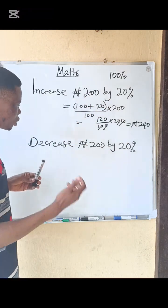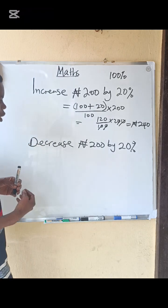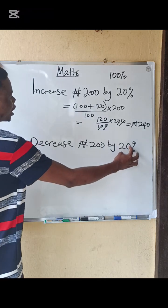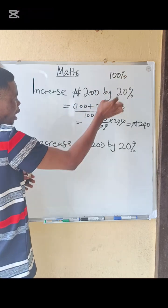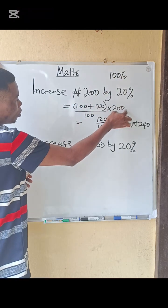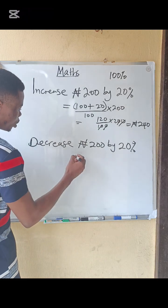Decrease means a reduction. So that means I'm going to subtract 20% from this standard percentage, which is 100, and divide it by 100 and multiply it by 200.